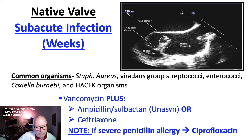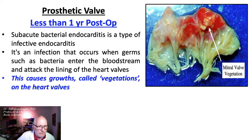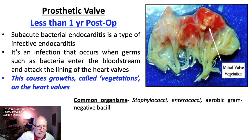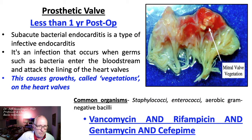If there's a severe penicillin allergy in this patient, replace with ciprofloxacin. In the case of a prosthetic valve infection less than one year post-op, this infection causes growths called vegetations on the heart valves. Common organisms include staphylococci, enterococci, and aerobic gram-negative bacilli. Treatment includes vancomycin, rifampicin, gentamicin, and cefepime. That's a lot of antibiotics.